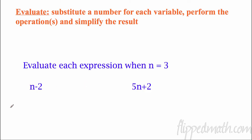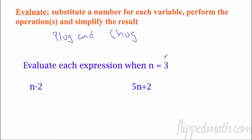So here we go. Evaluate means to substitute a number for each variable and perform the operation or operations and simplify the result. This is kind of like the directions — it tells you what you should be doing. I often refer to this as plug and chug. I'm going to plug in a number for a variable, and then I'm going to chug and do all the work and spit out an answer. So the first one here: N is three. When I come down here, instead of N, I'm going to put three. So three minus two, and I know that three minus two is one.